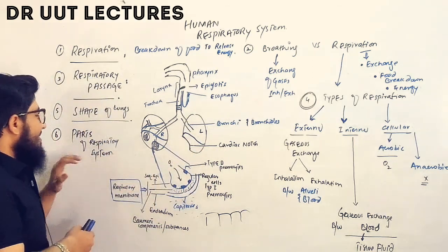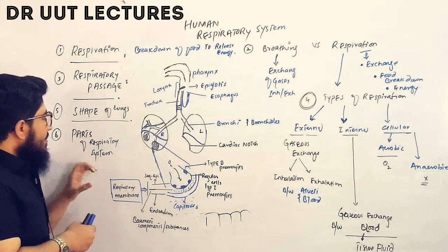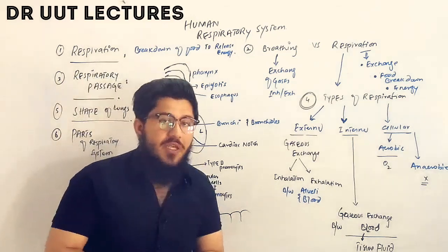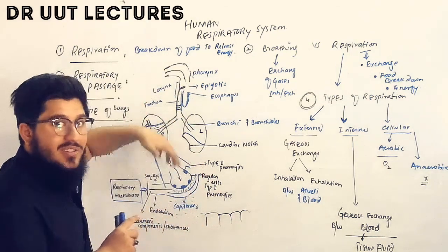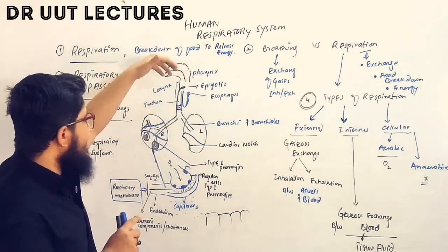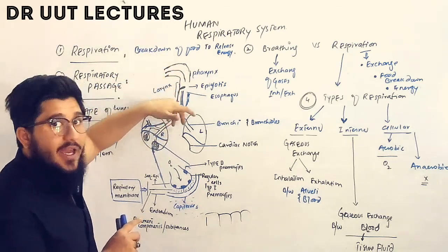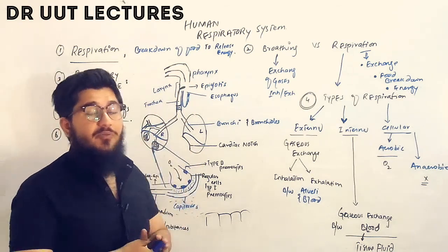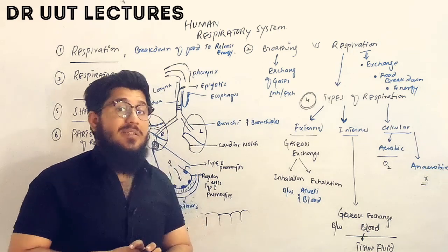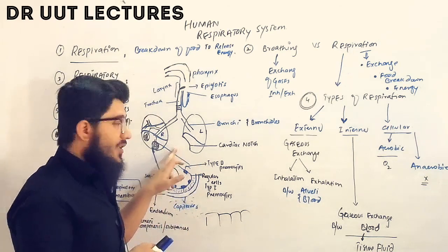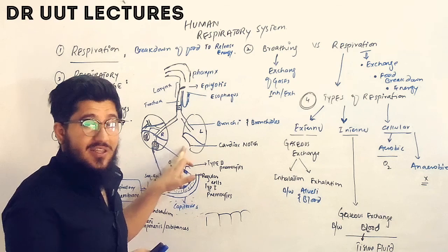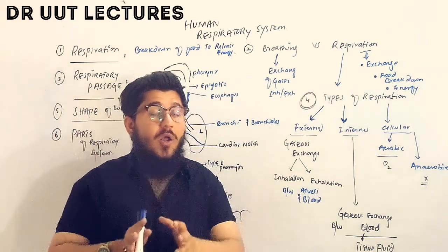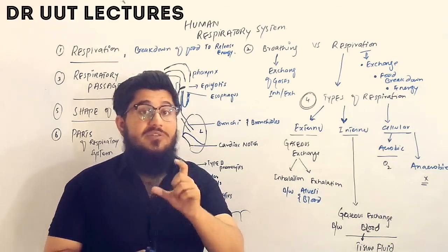Now for the sixth point: parts of the respiratory system. The respiratory system has three basic parts. First, the airways — including the nostrils, pharynx, larynx, trachea, and bronchi. Second, the lungs. Third, the muscles — specifically the dome-shaped diaphragm and the intercostal muscles of the ribs. All of these play a very important role in respiration.